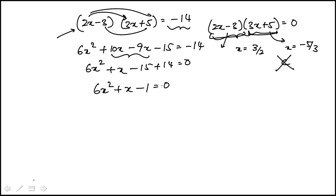And then you have to factor this. And the way I do this is multiply 6 and minus 1, which is minus 6. So I need two numbers that add up to 1 and multiply to minus 6. And that's going to be 3 and minus 2.